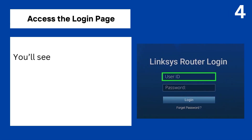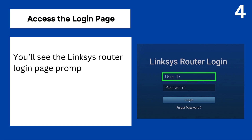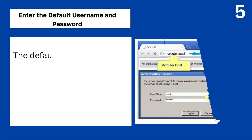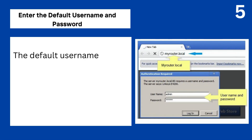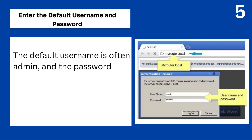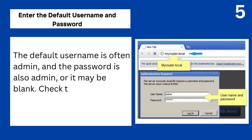Step 4: Access the login page. You'll see the Linksys Router login page prompting for credentials. Step 5: Enter the default username and password. The default username is often admin, and the password is also admin, or it may be blank. Check the router label for details if unsure.